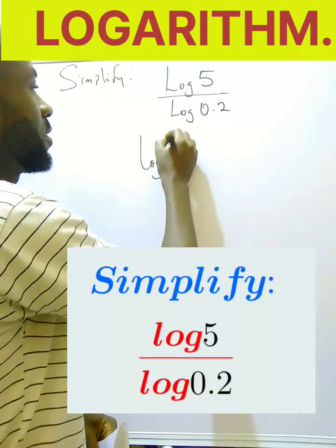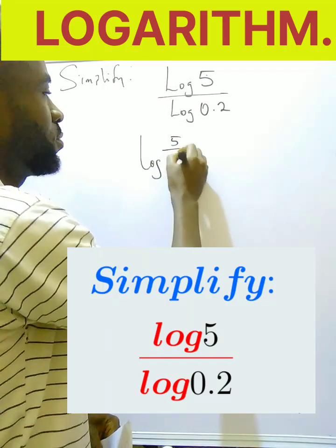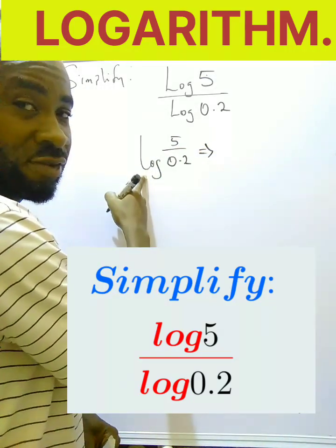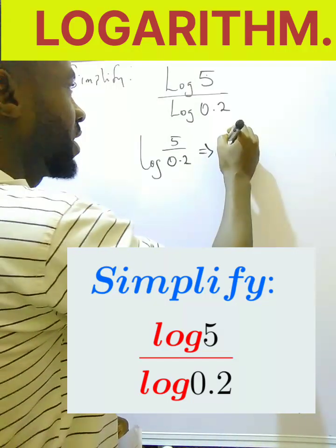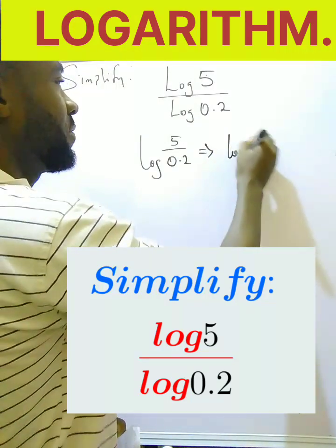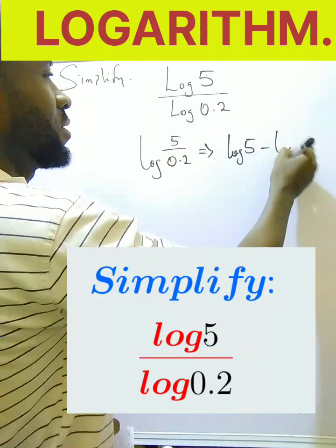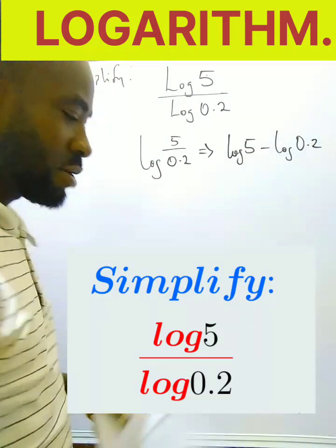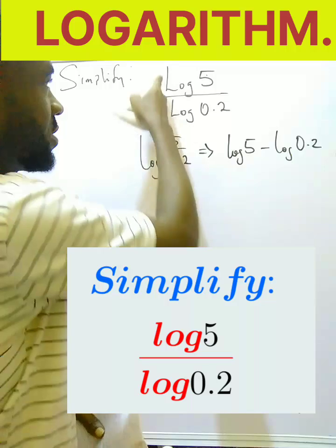If it was log 5 over 0.2, yes, this is a single logarithm. This is where we can write it as log 5 minus log 0.2. This is where the law can apply.